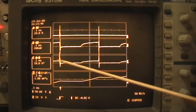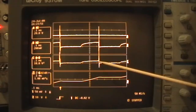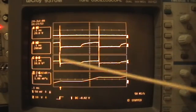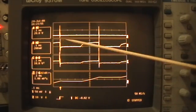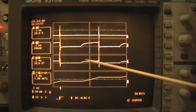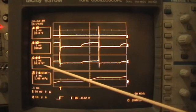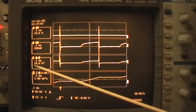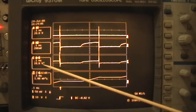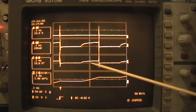And then this trace down here is the instantaneous power curve, which is the instantaneous multiplication of those two traces. So here we have the instantaneous power curve. And then this should be, this says 10 volts squared, so of course that should be 10 volt amps, or 10 watts per small division.